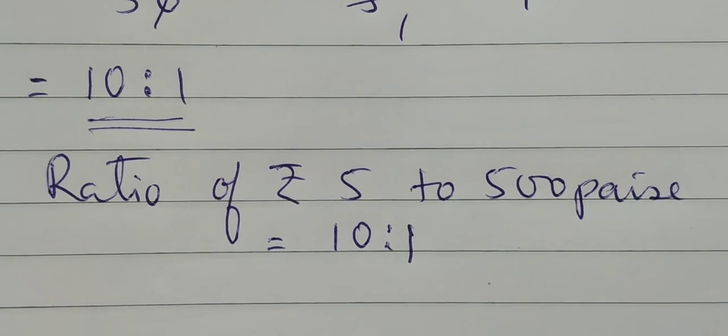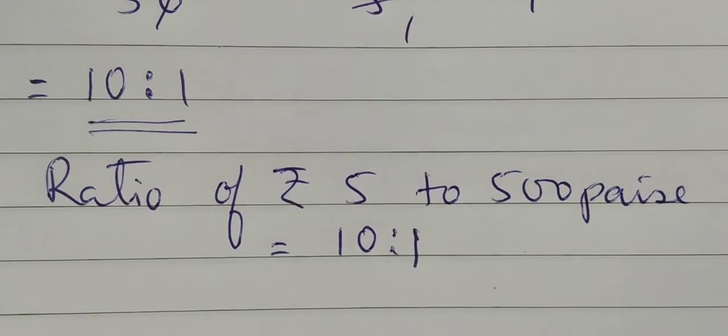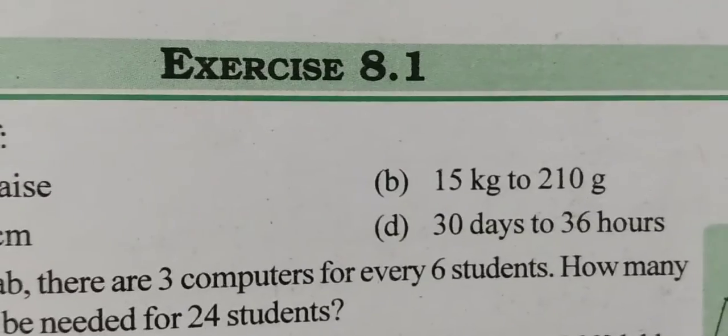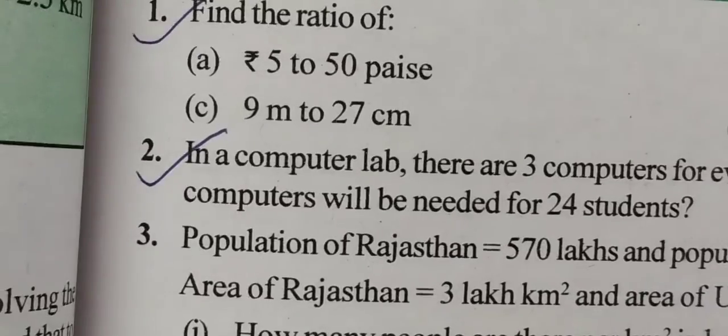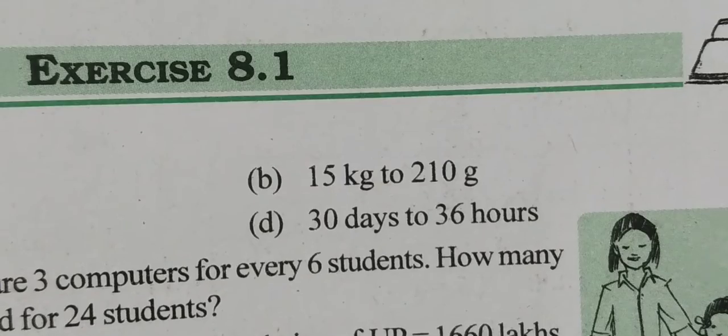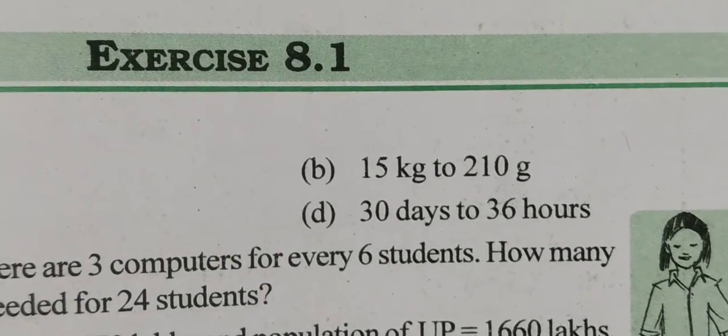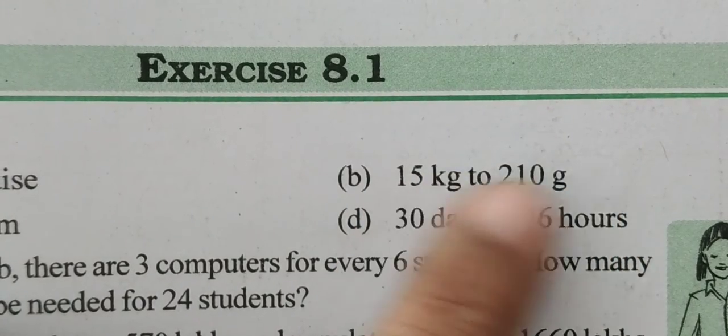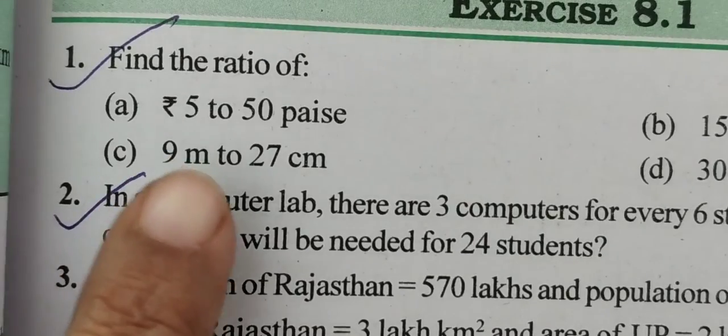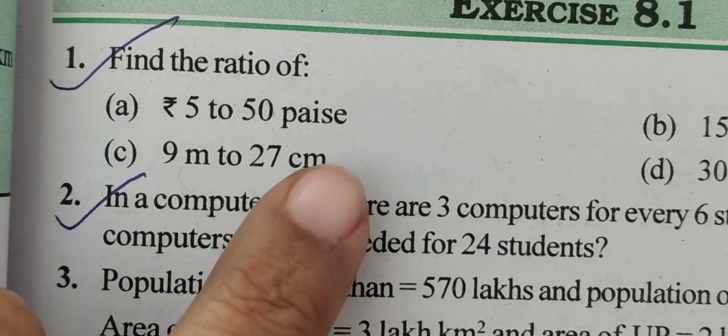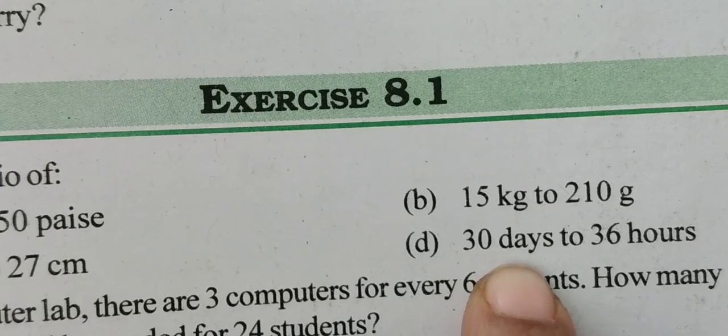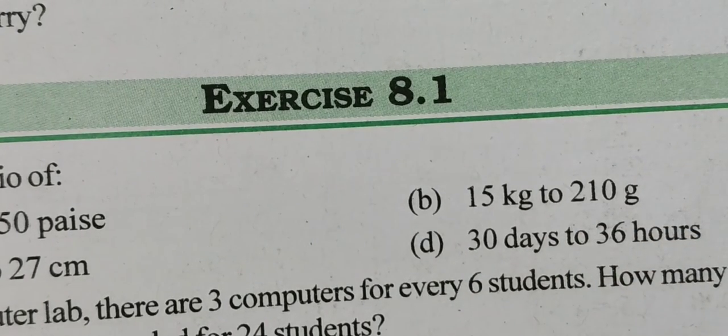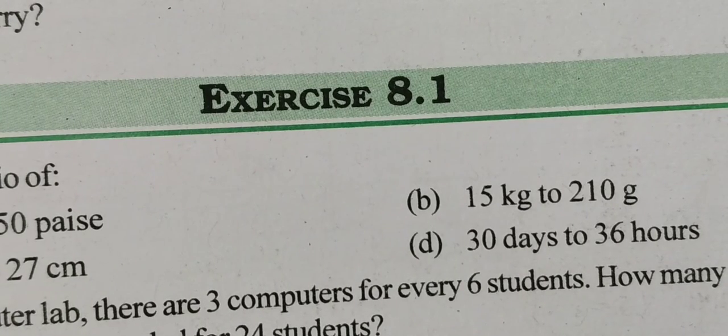Like this, we'll be solving the rest of the three ratios given: 15 kg to 210 gram, then 9 meter to 27 centimeter, and 30 days to 36 hours. Here, in case of kg, 1 kilogram equals 1000 grams. Then 1 meter equals 100 centimeter. And in case of days and hours, 1 day equals 24 hours. This comparison you have to keep in mind.